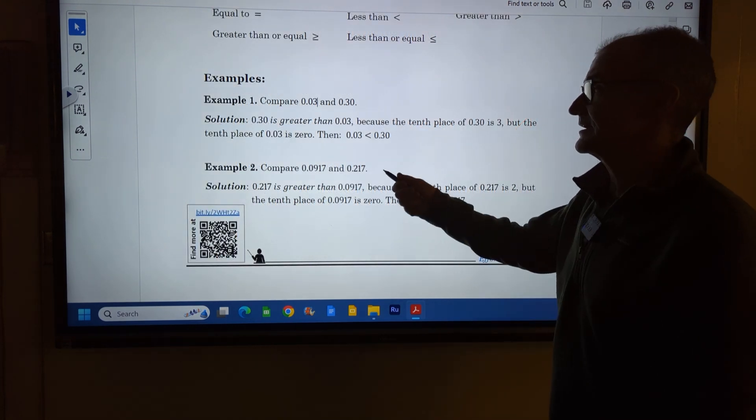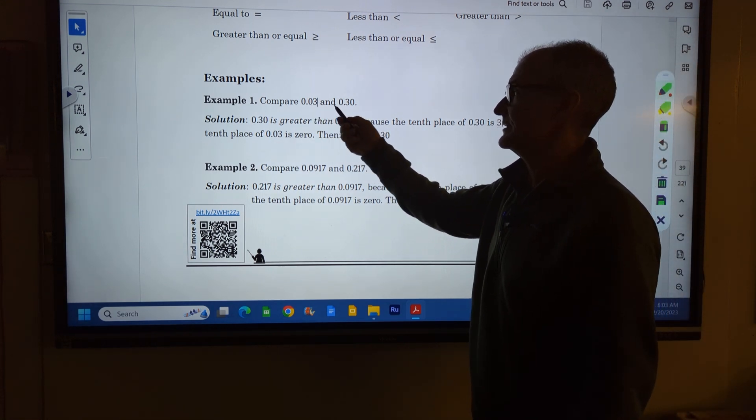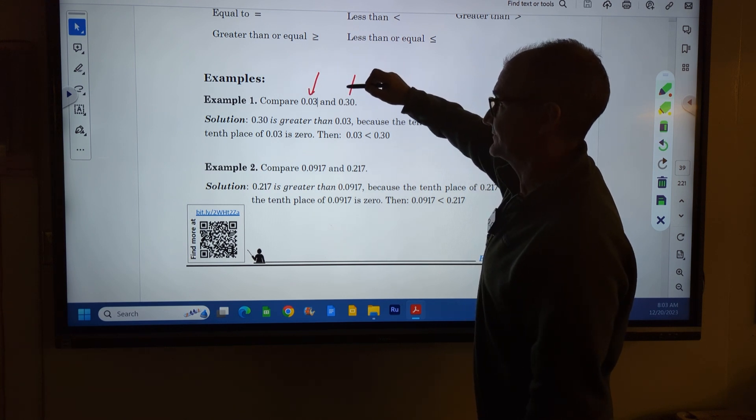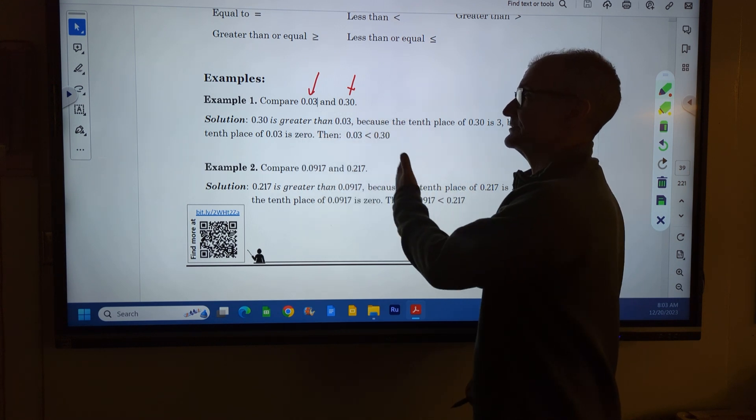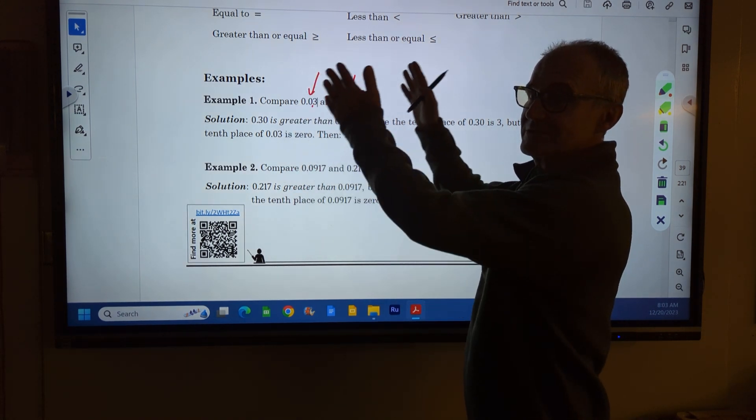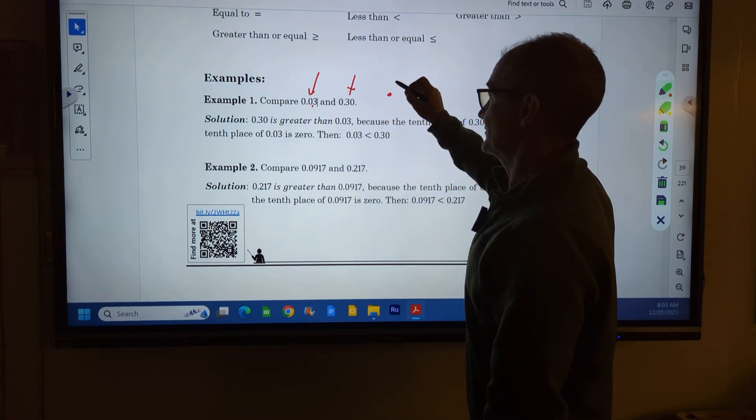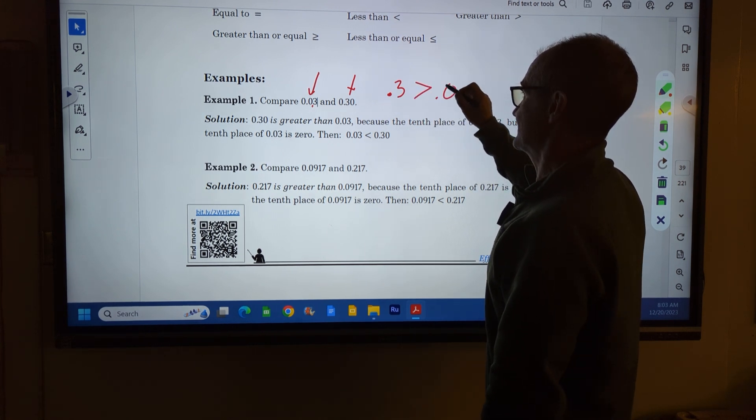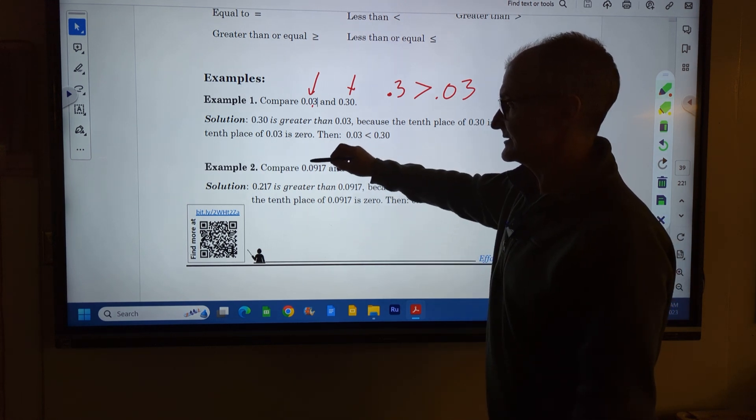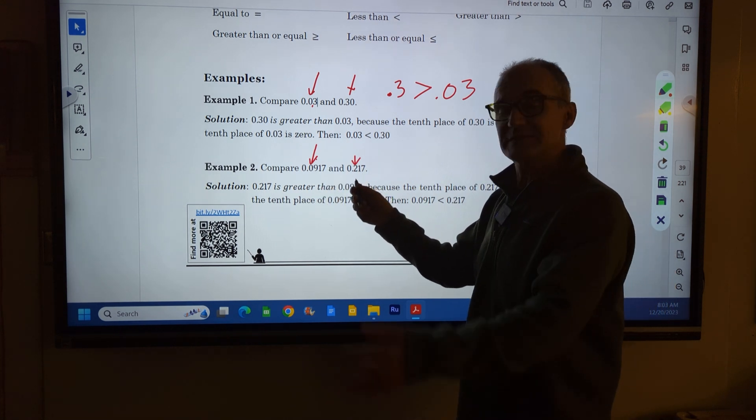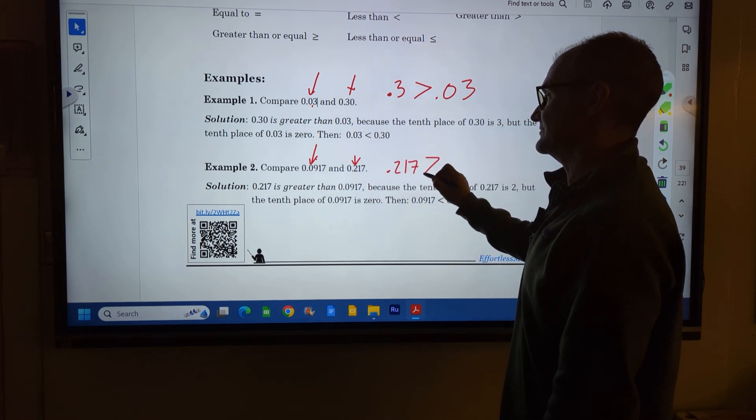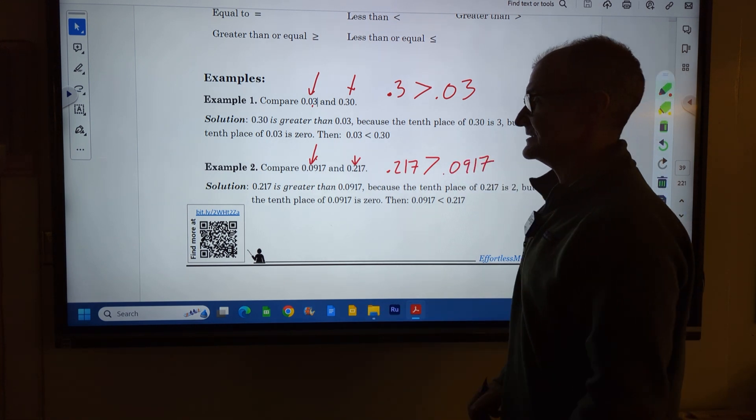Let's compare decimals. Compare .03 and .30. We've got to figure out what our tenths are. Our tenths here is 0, our tenths here is 3. Before we compare anything, we're going to look at the first number to the right of the decimal place and see which one's greater. 3 is greater than 0. So .30 is greater than .03. Here's another one: .0917 versus .217. Go right to the tenth place first. .217 is greater than .0917.